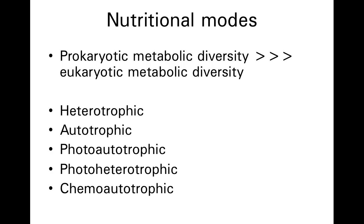There are a lot of things that prokaryotes can do that eukaryotes just haven't quite figured out. They can be heterotrophic, meaning feeding on different things. We are heterotrophs — we have to eat food derived from other living things. We don't photosynthesize or produce our own nutrients without feeding.